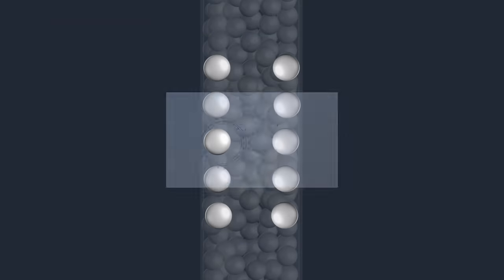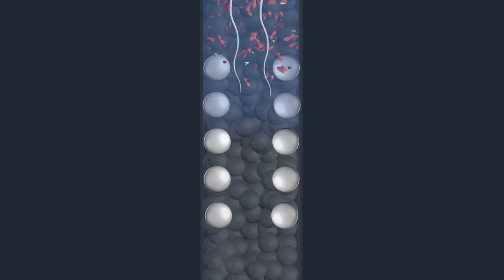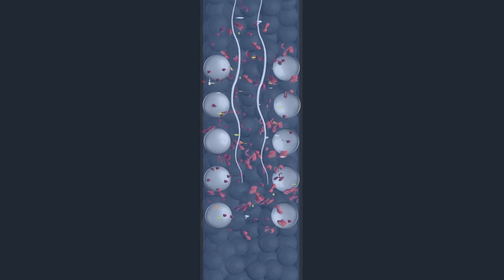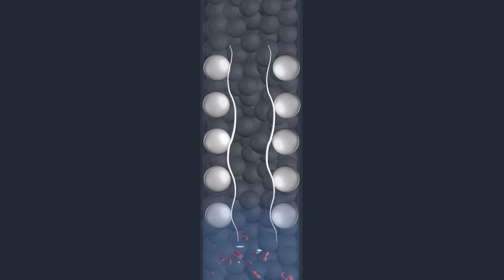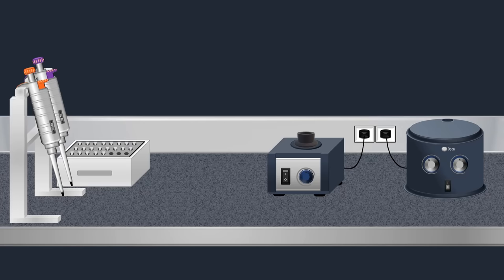Under optimal salt and pH conditions, RNA molecules bind to the silica gel membrane and at the same time, protein and other contaminants are not retained. After centrifugation, the spin column is placed into a clean collection tube and the filtrate is discarded.